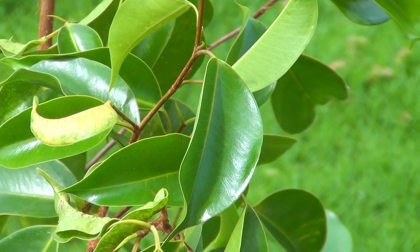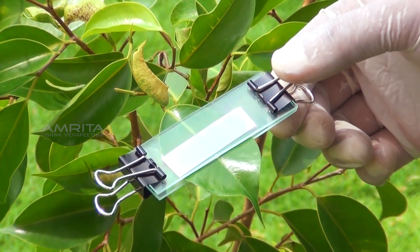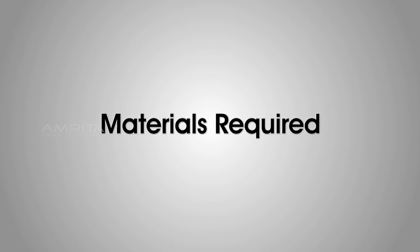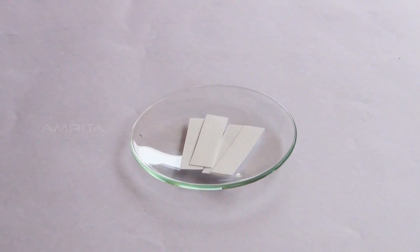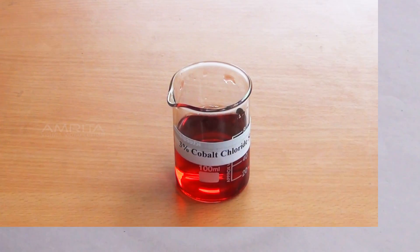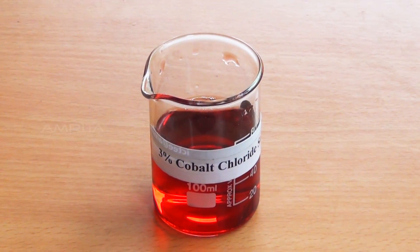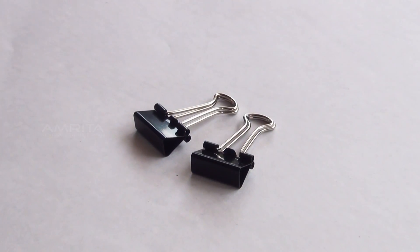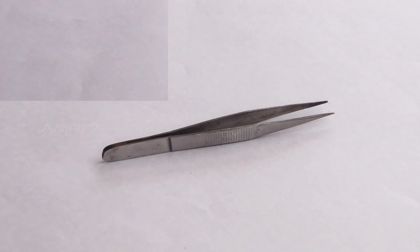Rate of transpiration can be easily demonstrated by the cobalt chloride paper test. Materials required: a potted plant, filter paper strips, 3% cobalt chloride solution, glass slides, binder clips, Petri dish, forceps, and a watch glass.